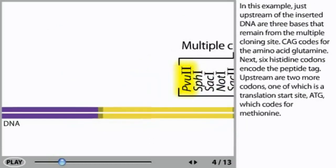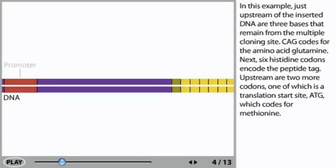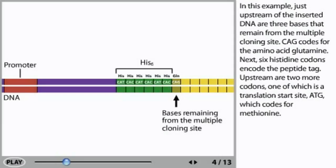In this example, just upstream of the inserted DNA are three bases that remain from the multiple cloning site. CAG codes for the amino acid glutamine. Next, six histidine codons encode the peptide tag. Upstream are two more codons, one of which is a translation start site, ATG, which codes for methionine.